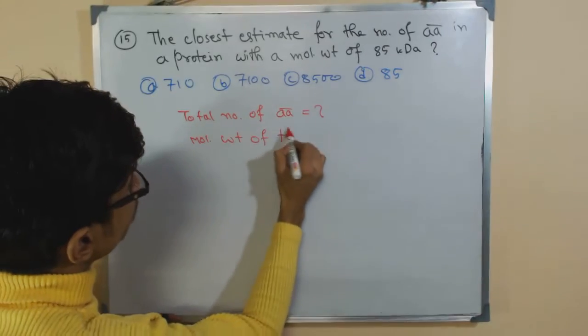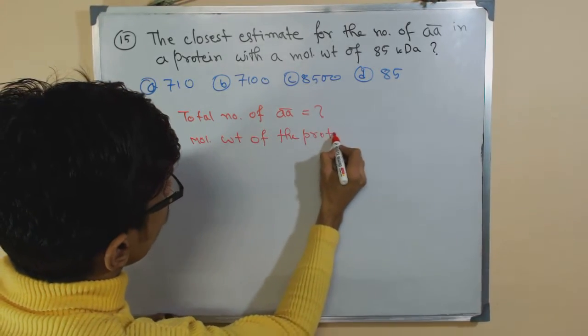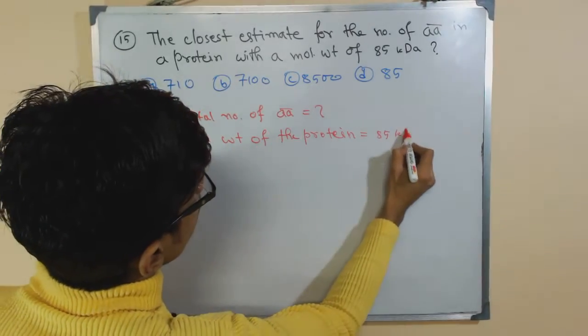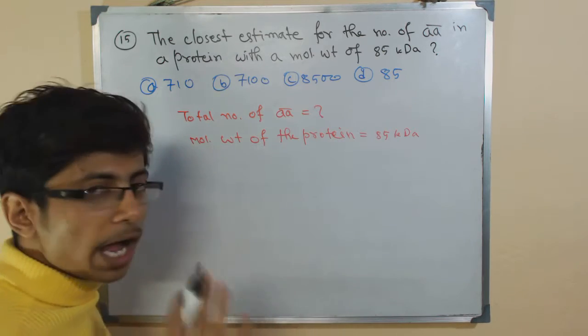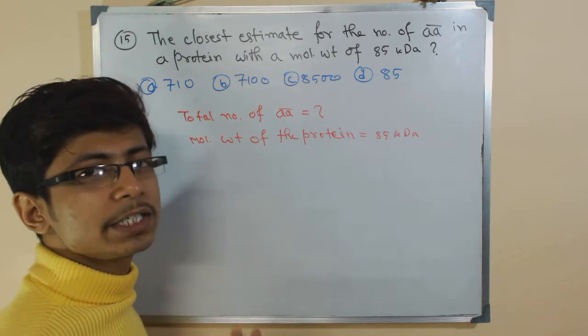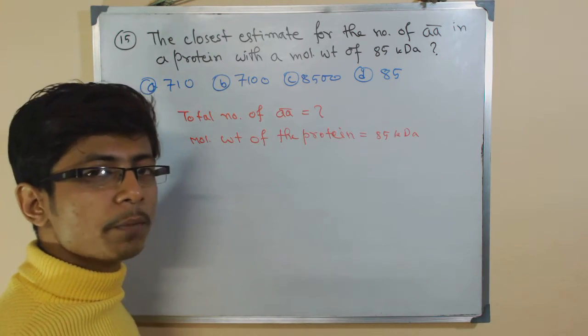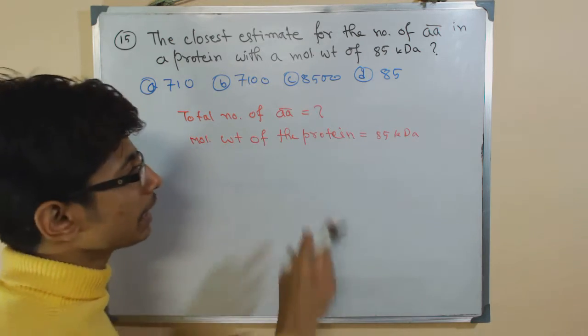The protein molecular weight is provided: 85 kDa. What we need to know is how much one amino acid weighs. If we know the molecular weight of one amino acid, we can easily calculate that. Very basic calculation.